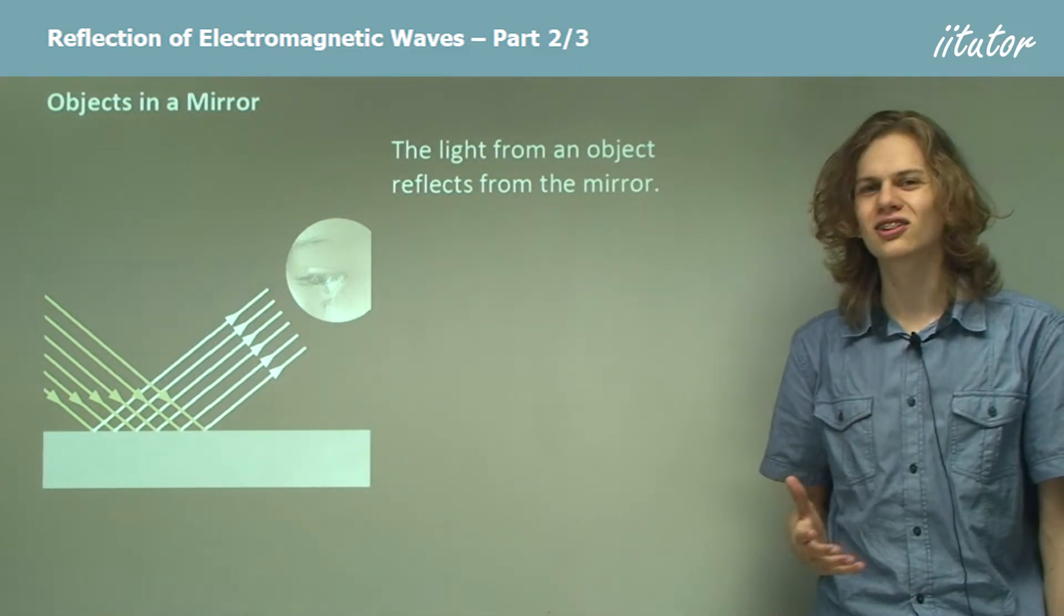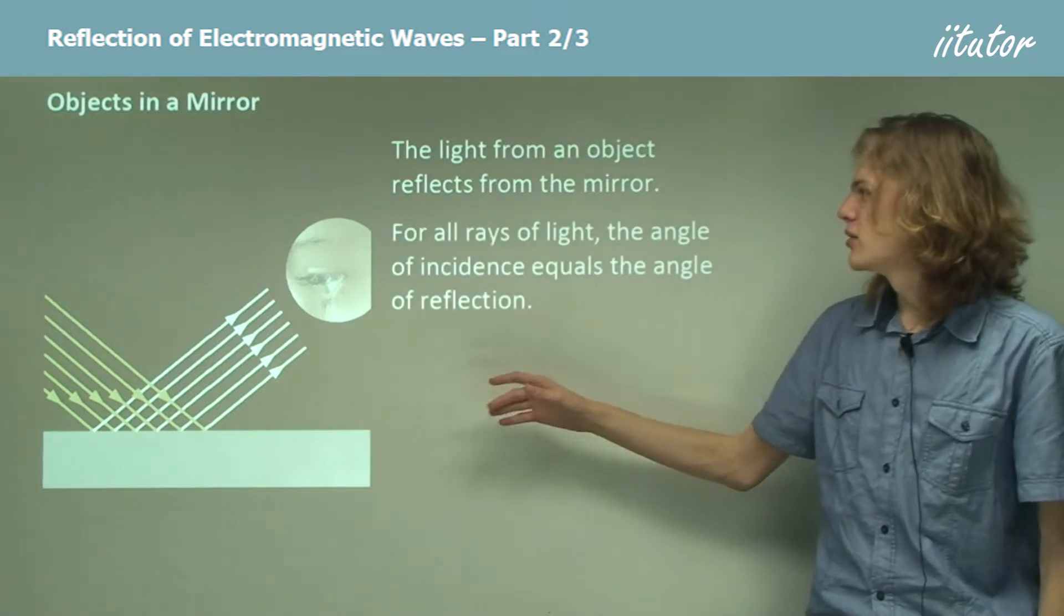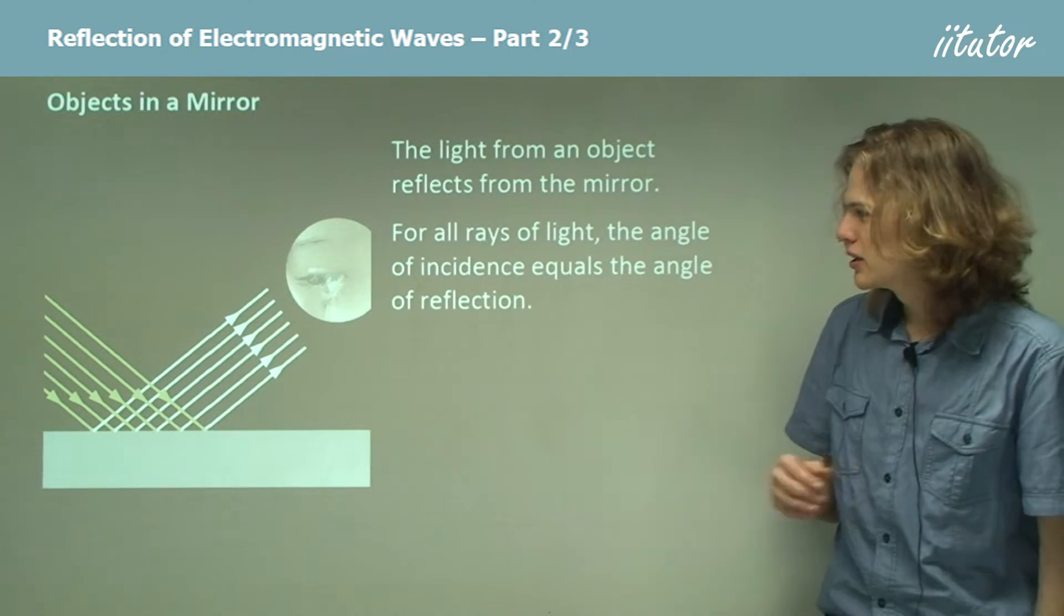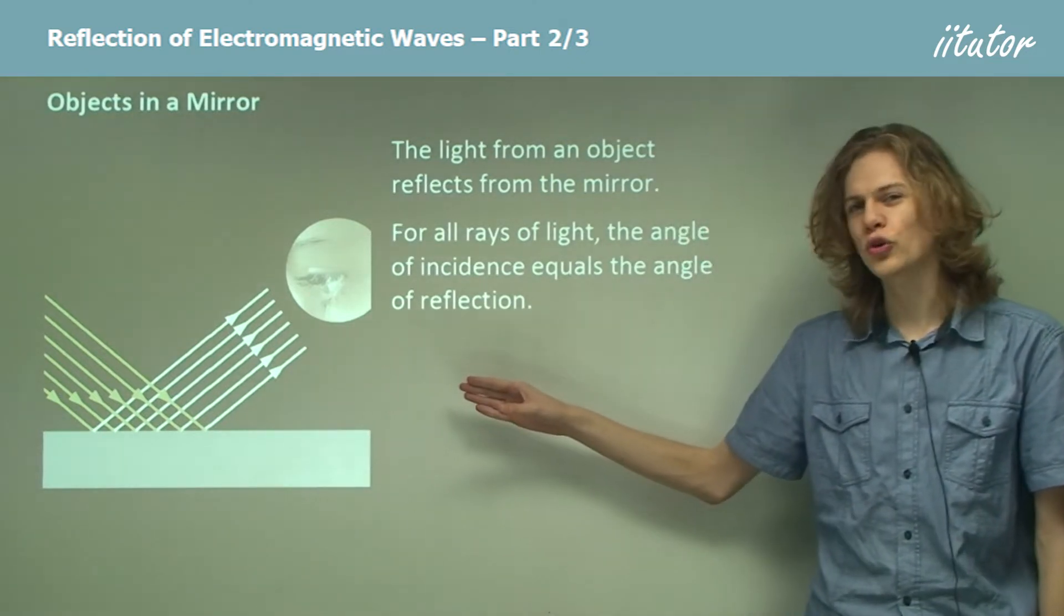Those are represented by the white lines. So for all the rays of light that are coming in, the angle of incidence will equal the angle of reflection. We can see that all the lines coming in are parallel, so all the reflected lines are also parallel.